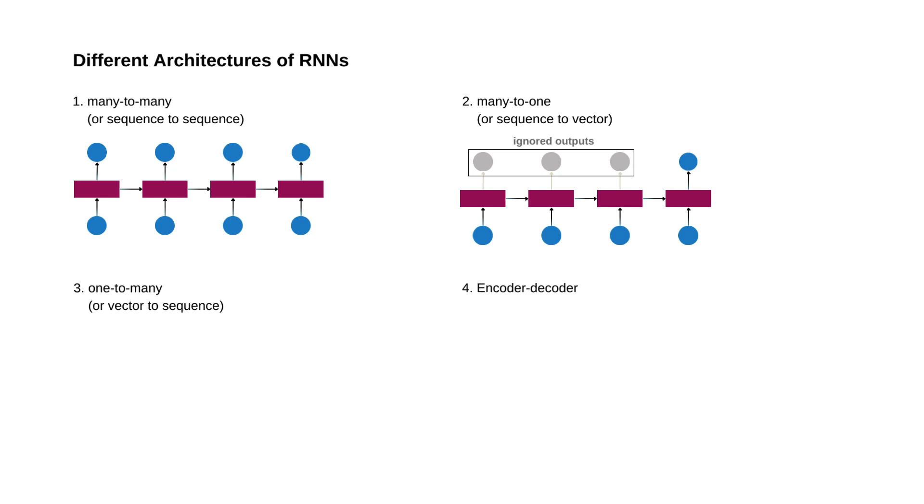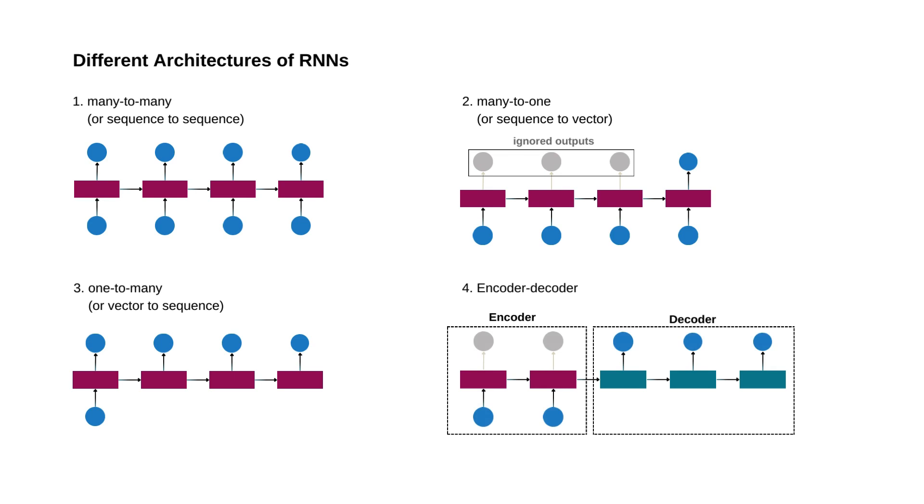Third, there is one-to-many, or vector-to-sequence. Here, only a single input is given in the beginning, and all time steps only use previous output as input. This is useful in image captioning, where an image is given as input, and a caption is generated for it. Fourth, we have encoder-decoder. In this type of architecture, at first, we only provide inputs for some time steps, and then we only get outputs. These are good for translations, as we need the whole sentence before translation can be done, as meaning of sentences can change based on their position. So, we choose the type of architecture according to the problem in hand.